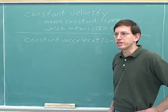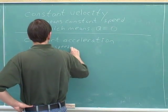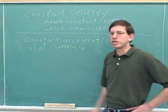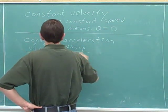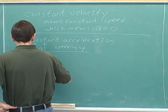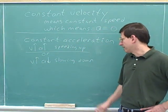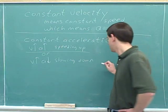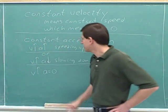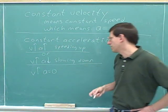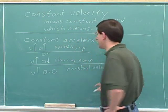If you have a constant acceleration, that definitely does not mean that your velocity is constant. If your acceleration is parallel to the velocity, then a constant acceleration just means that you're speeding up at a constant rate. Or if your acceleration is anti-parallel to your velocity, then a constant acceleration would mean that you're slowing down at a constant rate. Only if the acceleration is constant at zero do you know that the velocity is also constant.